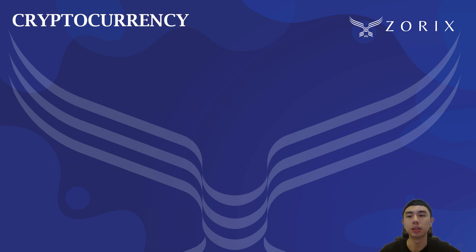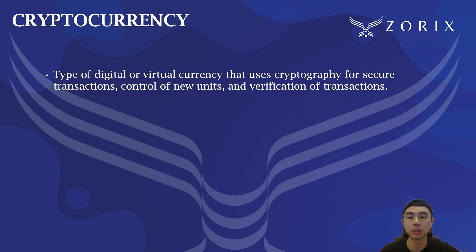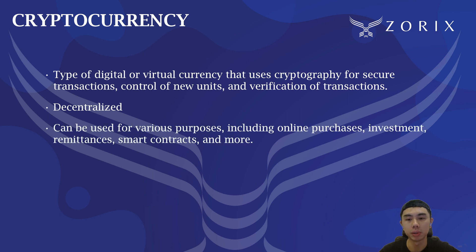So what is cryptocurrency? Cryptocurrency is a type of digital or virtual currency that uses cryptography for secure transactions, control of new units, and verification of transactions. It is decentralized and typically operates on a technology called blockchain. Cryptocurrency can be used for various purposes, including online purchases, investment, remittance, smart contracts, and more.